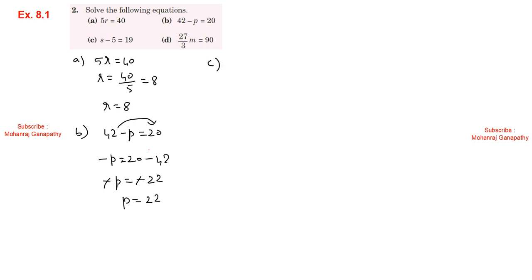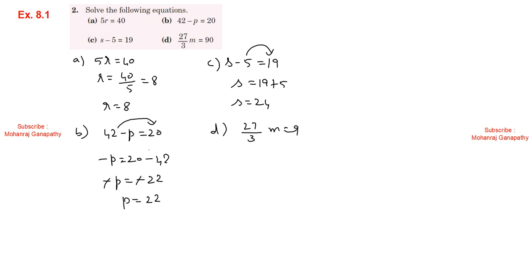Part c: s minus 5 equals 19. Moving constants to one side: s equals 19 plus 5, so s equals 24. Part d: 27 divided by 3m equals 90. 3 and 27 cancel to give 9, so 9m equals 90. Then m equals 90 divided by 9, therefore m equals 10.